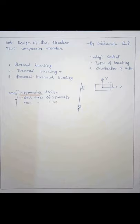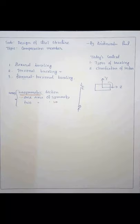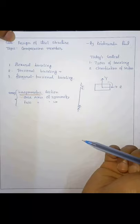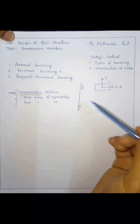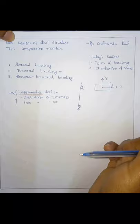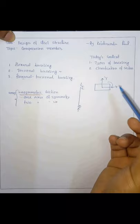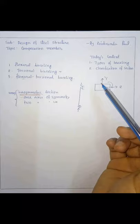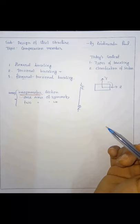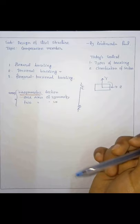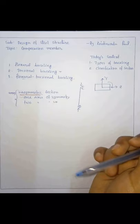To ensure sections don't fail locally, refer to Table 2 on page 18 of IS 800. Based on the width-to-thickness ratio, we can classify sections into four categories, each behaving differently. This ratio may be depth-to-thickness of flange, or depth-to-thickness of web. There are four classifications, and all depend on the width-to-thickness ratio. You can find the details in Table 2 of IS 800, page 18.